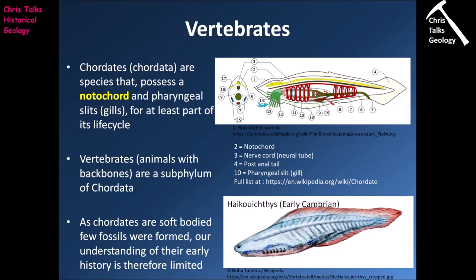Let's start talking about the vertebrates. When discussing vertebrates we need to begin with the chordates — phylum Chordata — so organisms that for at least part of their life cycle possess a notochord and gill slits, or at least the capacity to develop gill slits. This includes human beings. The notochord is a rod made of cartilage-like material that acts as a crude spinal column, helping to keep the body rigid and acting as a mounting point for muscle groups.